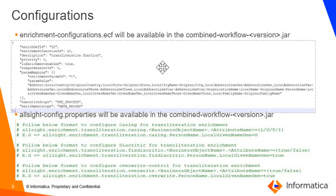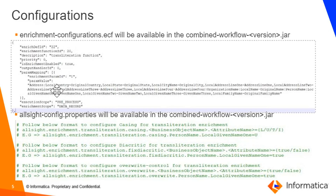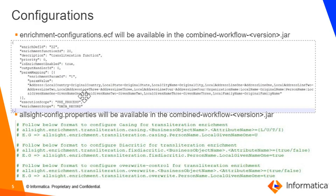The configurations file is enrichments-configurations.ecf, which contains all the enrichment functions. This is available in the combined workflows JAR. Enrichment function ID 20 stands for the transliteration function, and these are the out-of-the-box values. The syntax is: business object, followed by a colon, then the source attribute, then a hyphen, then the target attribute. You can separate multiple sets of attributes with a comma. When you want to move to the next business object, you use a pipe symbol.